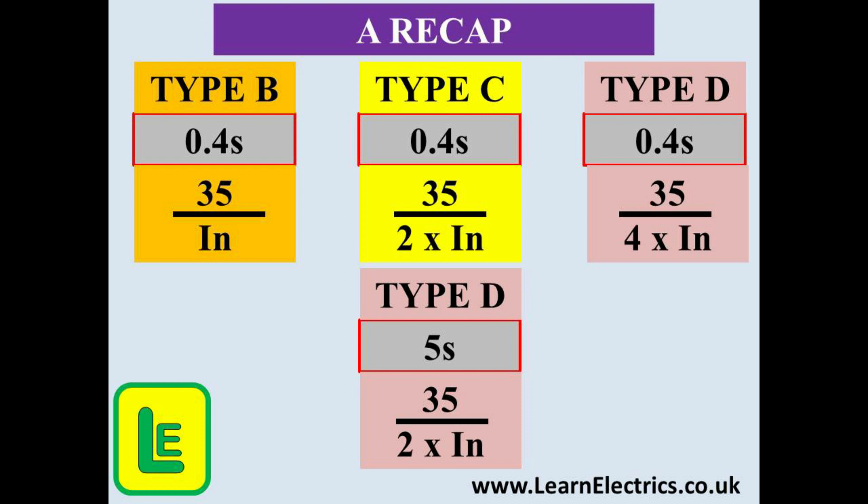That is how simple this formula is. If you are ever on site without your books and you can remember the number 35 then you can save the day. So a quick recap on this page. For a 0.4 second disconnection time and a type B breaker use the formula 35 divided by IN. And for 0.4 seconds under type C it is 35 divided by 2 times IN. Then we saw a type D breaker with a 5 second disconnection time and again it was 35 divided by 2 times IN. And finally for a type D with a 0.4 second disconnection time we used 35 divided by 4 times IN. Practice, practice, practice. Once you have learnt it you will have another powerful tool in your mental toolbox.